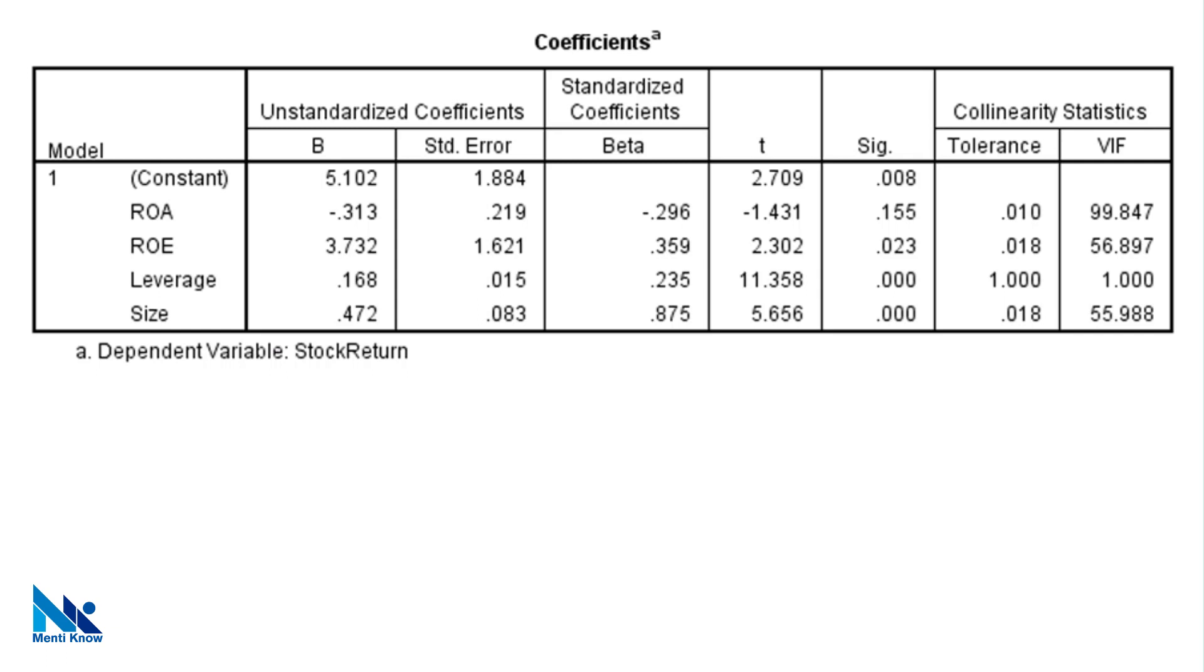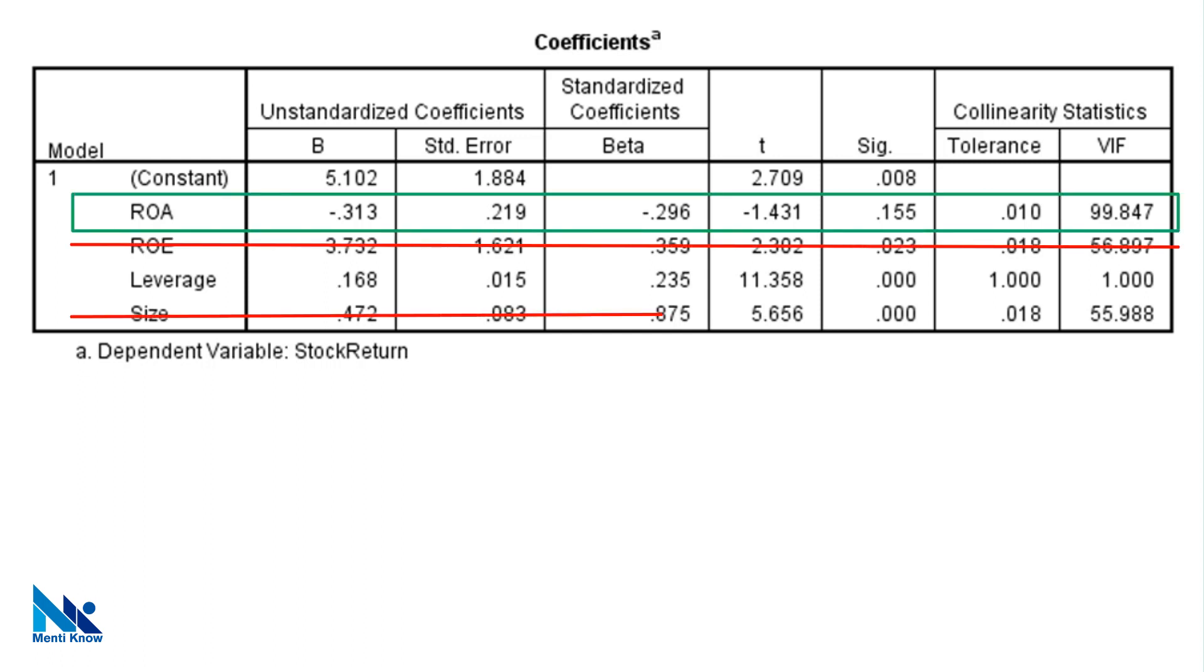One simple method to fix multicollinearity issues is to drop highly correlated independent variables so that only one is kept. For example, if there are 3 correlated independent variables, we can keep 1 and drop the other 2 from our model.